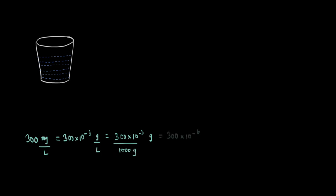We can simplify this and the units cancel out, giving us 300 times 10 to the power minus 6. 10 to the power 6 is a million. If you think of 10 to the power minus 6, you can take it to the denominator, so it becomes per million.